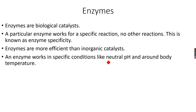Enzymes work in specific conditions — neutral pH and around body temperature. This makes sense because we have enzymes inside our body, and they can only function at body temperature. If the temperature changes to an extreme — too hot or too cold — the enzymes get denatured. Neutral pH is also a condition favored by enzymes.